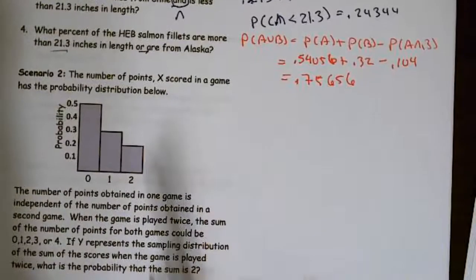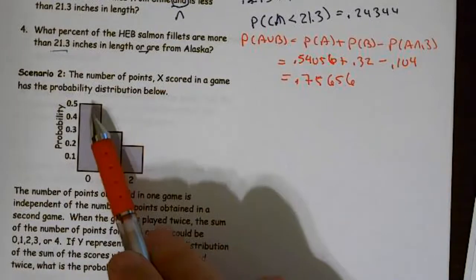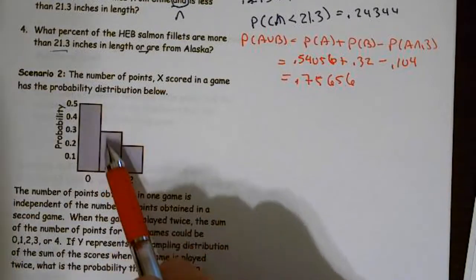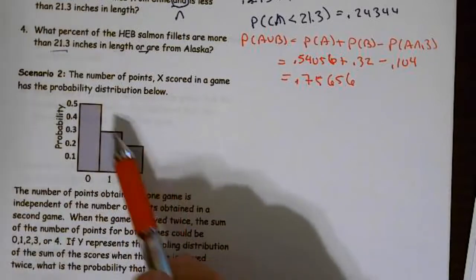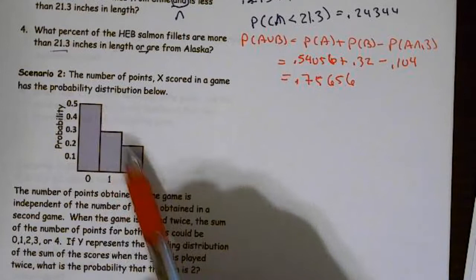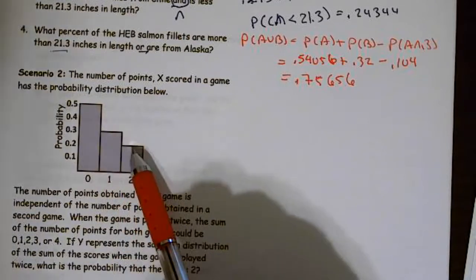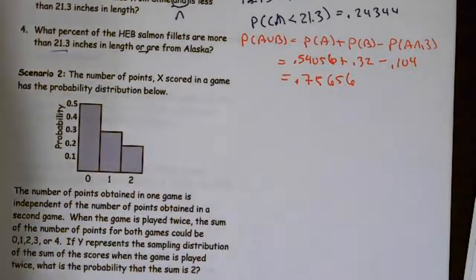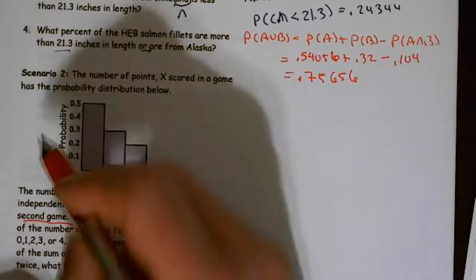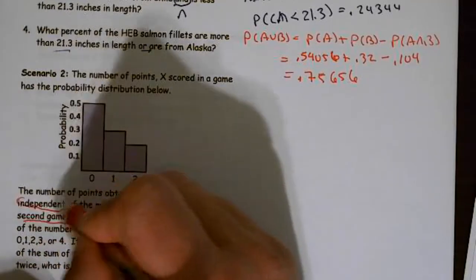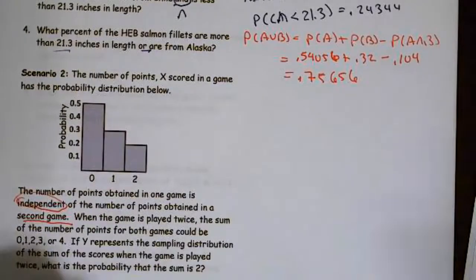The number of points scored in a game has a probability distribution: 50% chance of getting 0, 30% chance of getting 1, and 20% chance of getting 2. If I sum those together, 0.5 + 0.3 + 0.2 = 1.0, confirming it's a valid probability distribution. The number of points obtained in one game is independent of the number obtained in the second game.